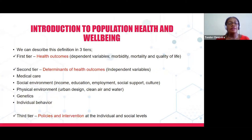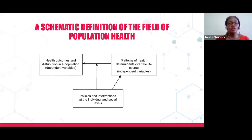The second tier looks at determinants or distribution of health outcomes and takes into consideration issues of medical care, social environment, physical environment, genetics, and individual behavior. The third tier looks at policies and interventions that influence the population at individual, social, or organizational levels. Policies and interventions can influence the distribution and determinants of health and can also influence health outcomes within the population.